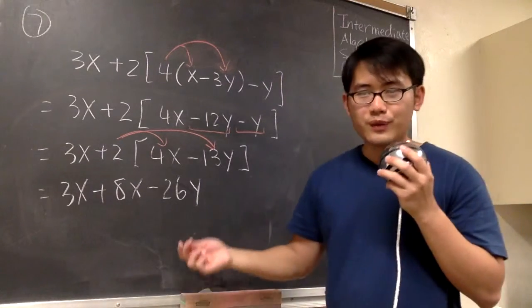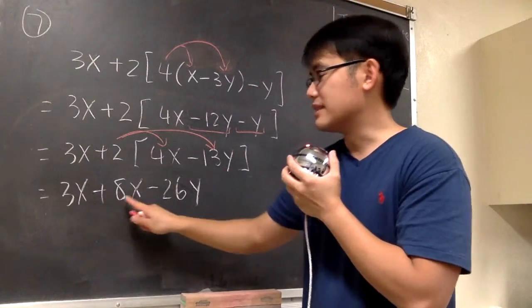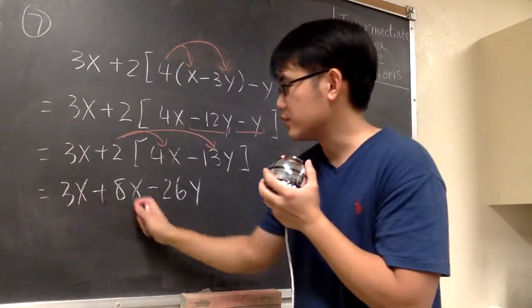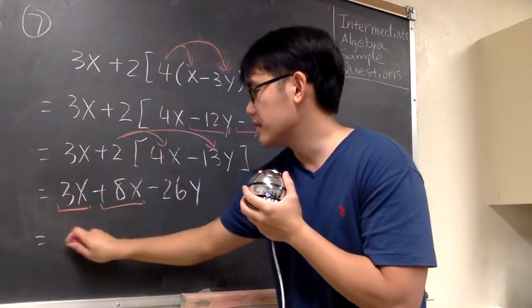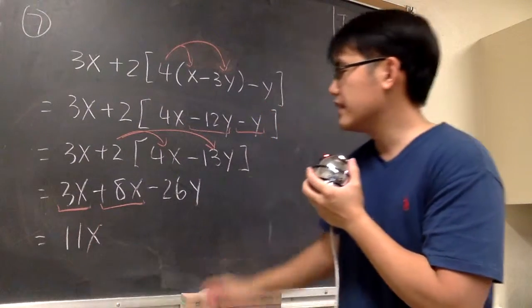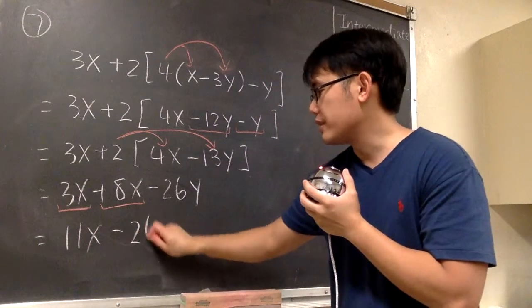At the end, what can we do next? Well, we have 3x plus 8x. We can combine these two terms. 3x plus 8x, that will give us 11x. And then we have the minus 26y.